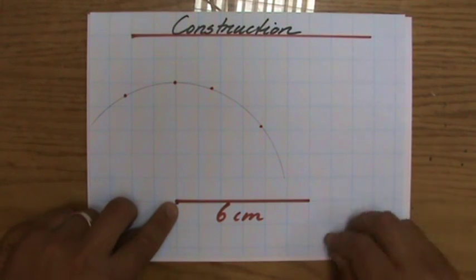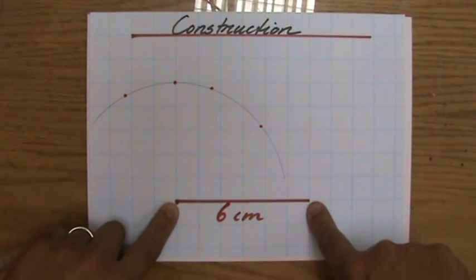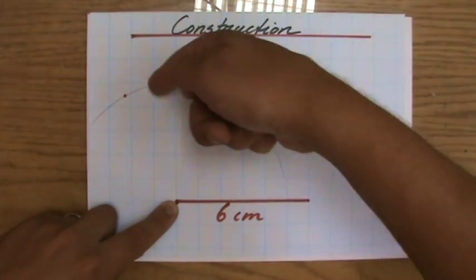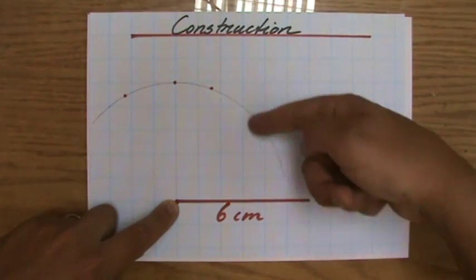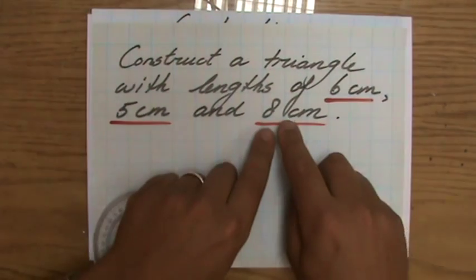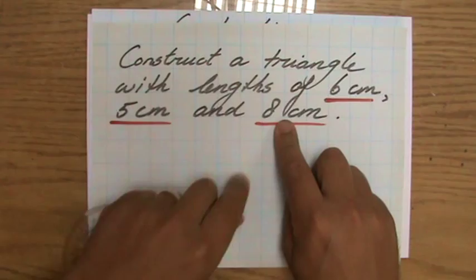So this is one point of my triangle. That is a vertex of my triangle. Where is the third one? Somewhere on the circumference here, somewhere on this arc. But I don't know where yet. But they gave me more information, because they say the other length should be 8 centimeters.